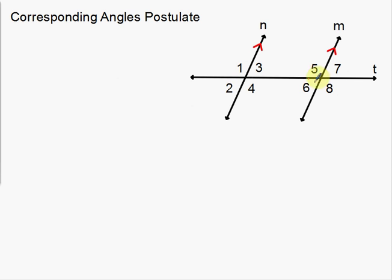Corresponding angles are angles in the same position between two intersections. Here's one intersection, here's the other — they're in the same position. Angles 3 and 7 are both top right, so they're in the same position. That's a little overview of the vocabulary.